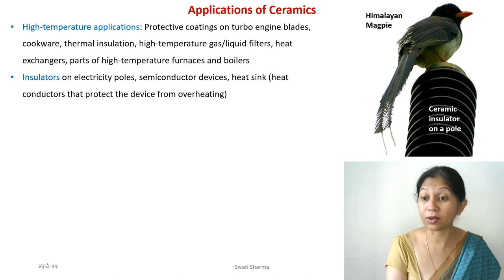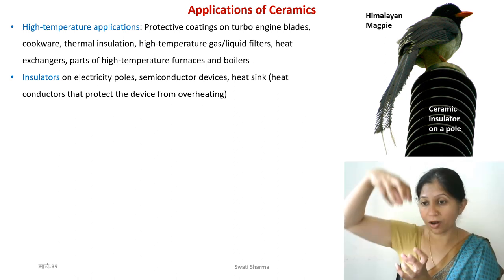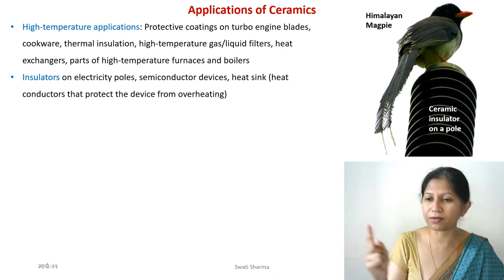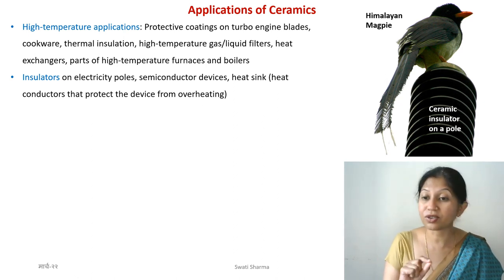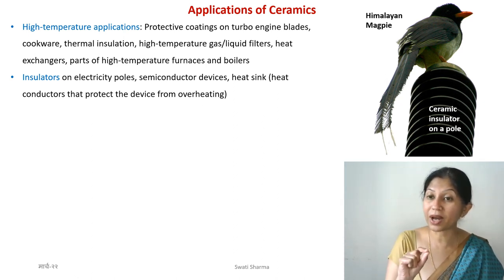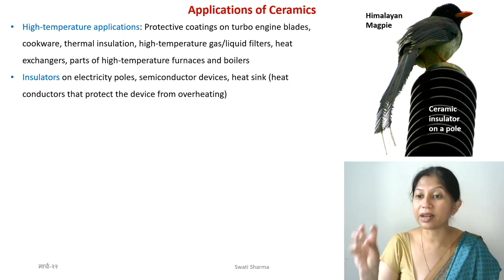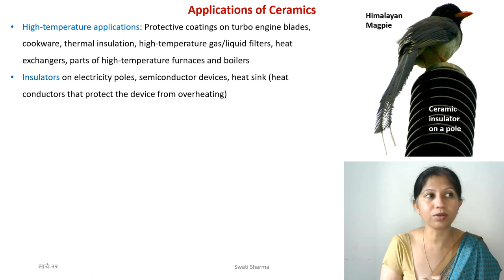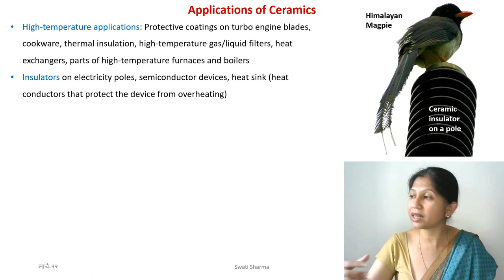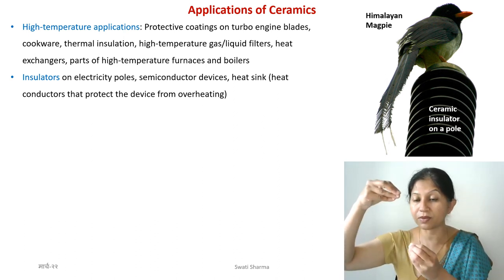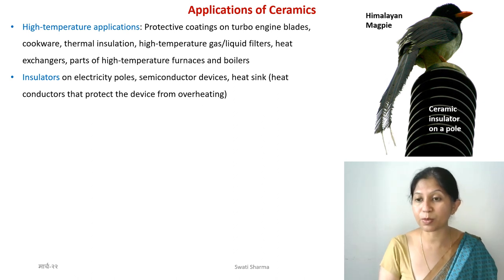Ceramics are also used as insulators. There is a picture of a Himalayan magpie — common on IIT Mandi campus — sitting on top of an electric pole. On top of the pole you can see ring-like plate structures stacked on each other; these are ceramic insulators. Ceramics are usually very good insulators of electricity, which is why ceramic parts are found on cables and electric poles, transformers, and electricity substations to keep high-voltage cables separated.